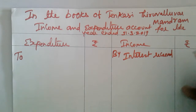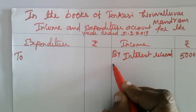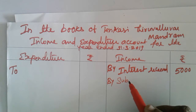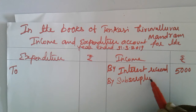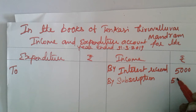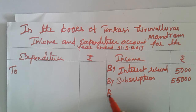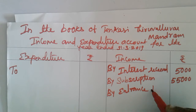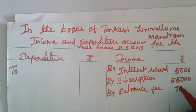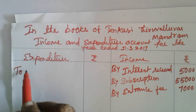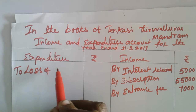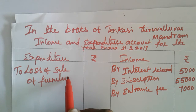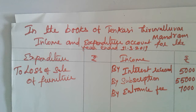Interest received 5,000. Next, by subscription 55,000. Next, by entrance fees 7,000. Loss on sale of furniture — furniture book value 17,000 versus sale proceeds 16,000.